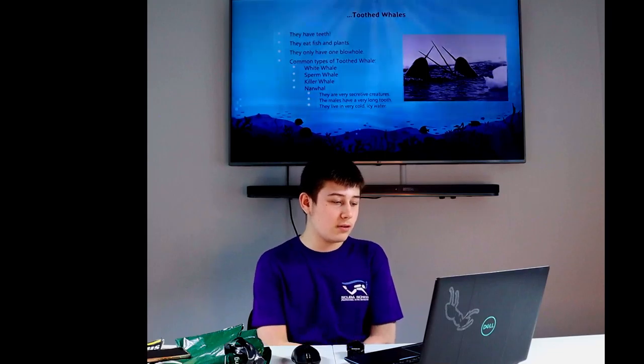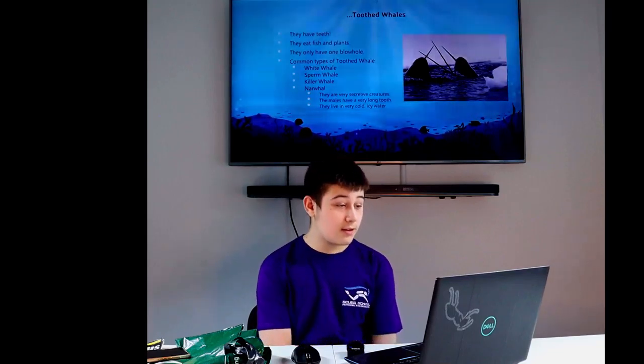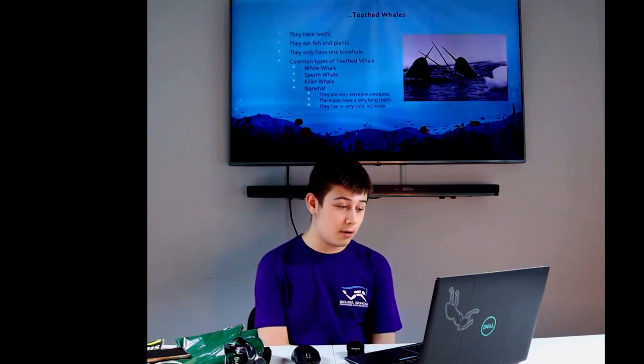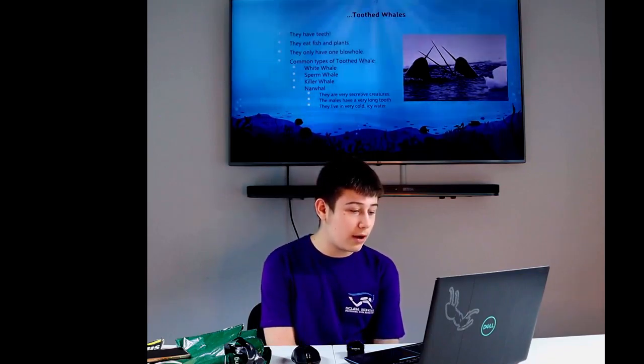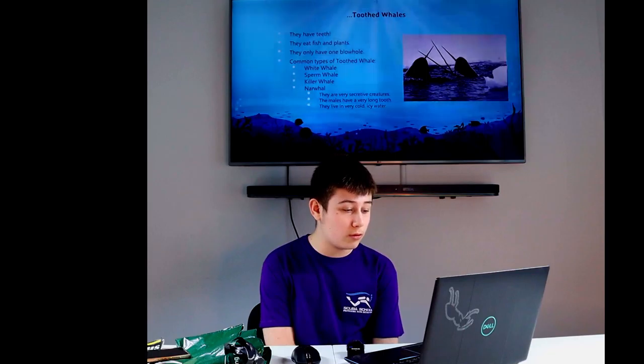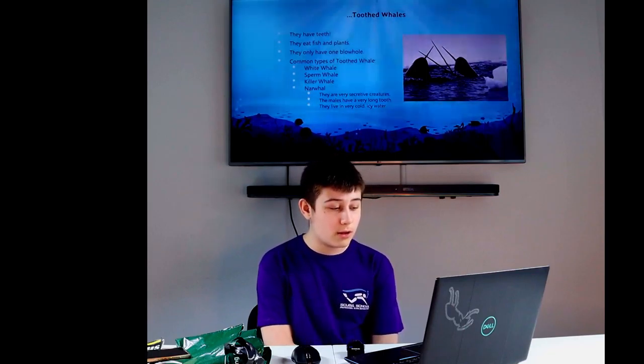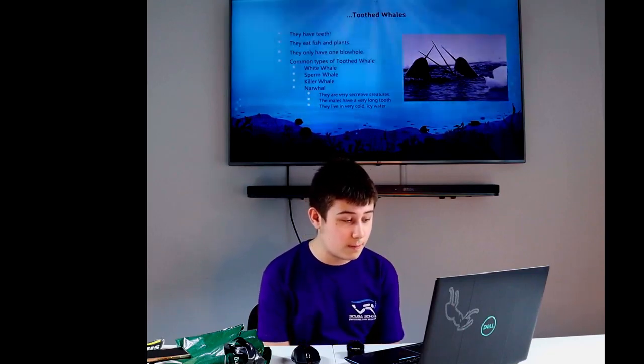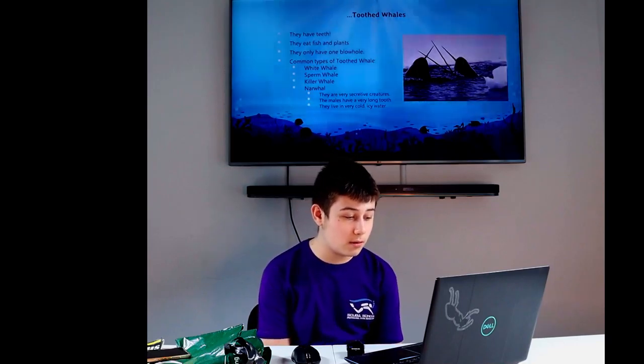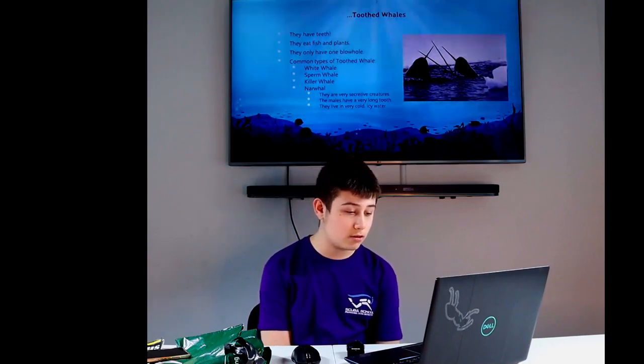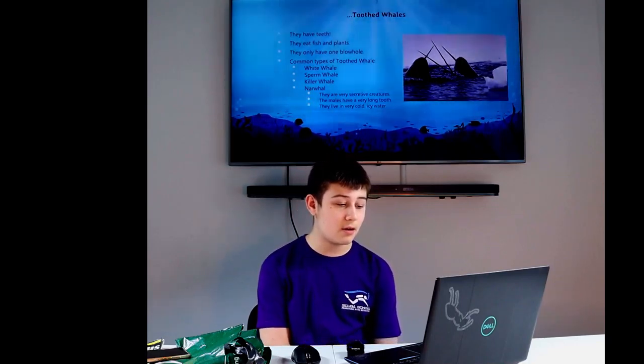Toothed whales: They have teeth. They eat fish and plants. They only have one blowhole. White whales, sperm whales, killer whales and narwhals. Facts about the narwhals: They are very secretive creatures. The males have very long tusks. They live in icy cold waters.